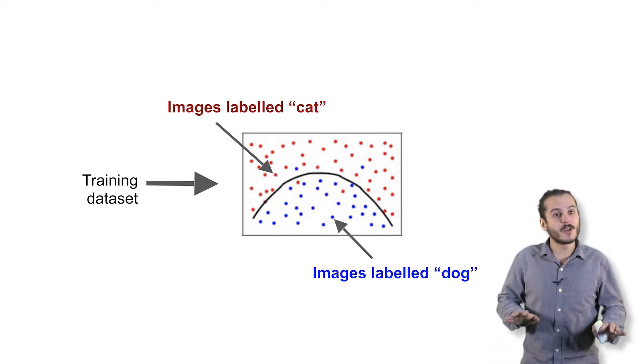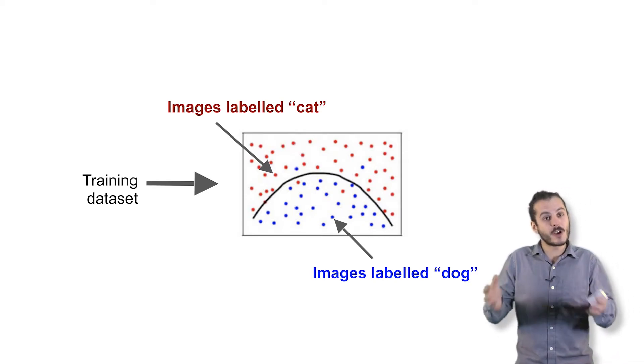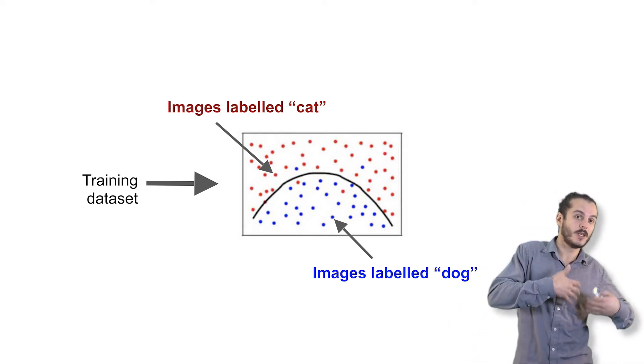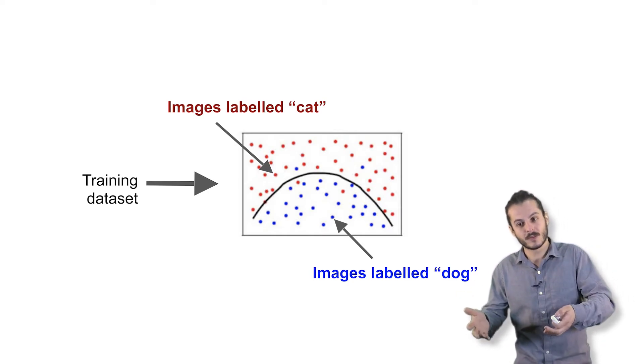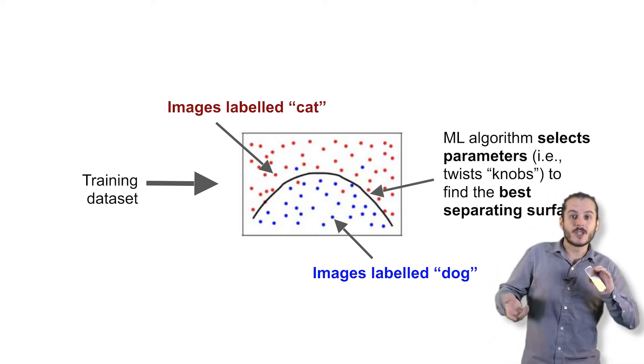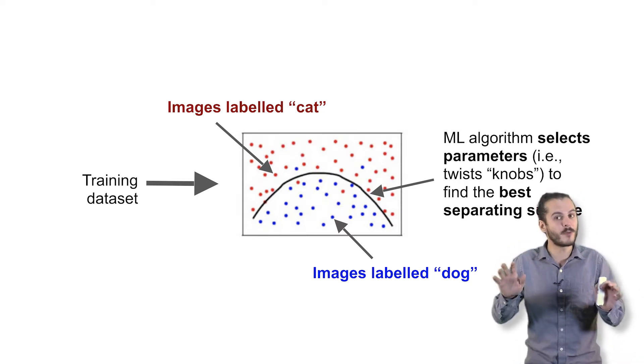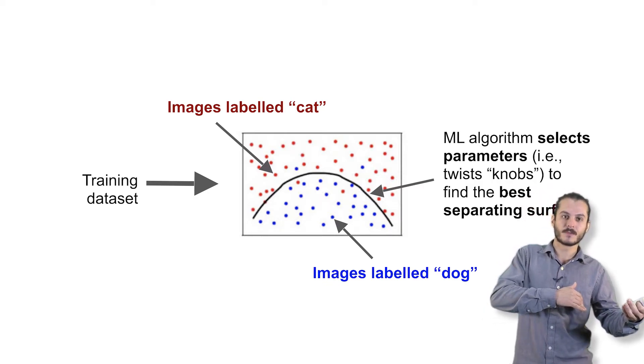A supervised learning algorithm does the following. It essentially tries to find a surface that separates points of one class, the dog points, from points of the other class, cat points. And it does this by adjusting knobs, which are called parameters, so as to best separate the red points from the blue points.